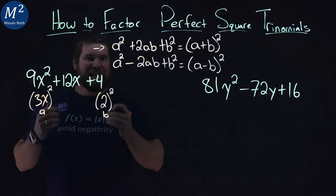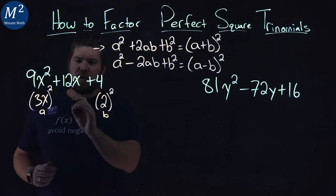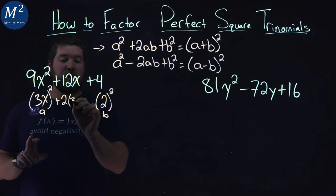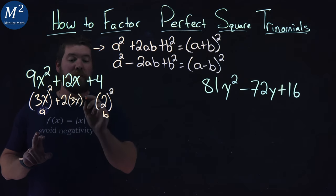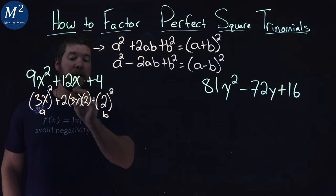What about the inside? What is 2ab? Does that equal 12x? So, if we have 2 times our a value, 3x, times our b value, which was 2, does that equal 12x?